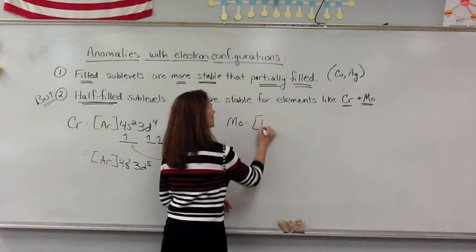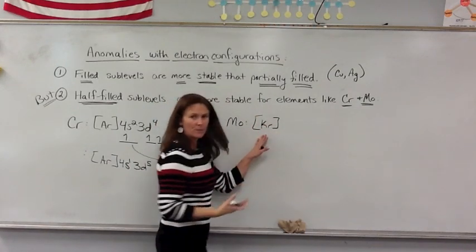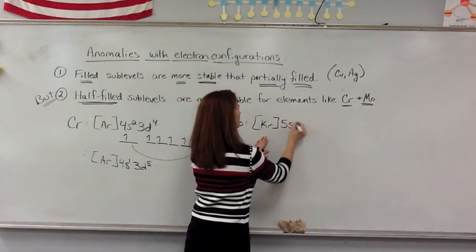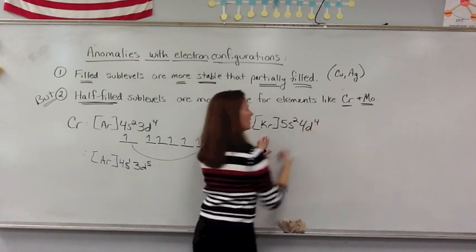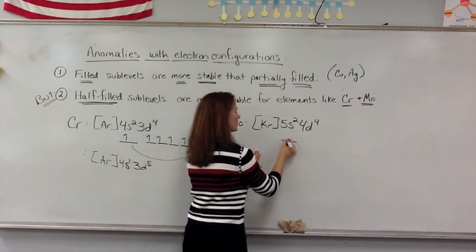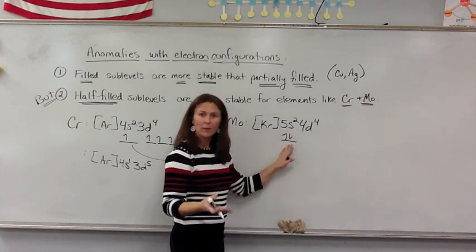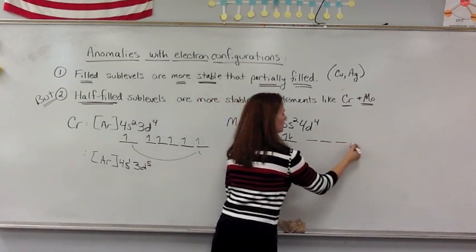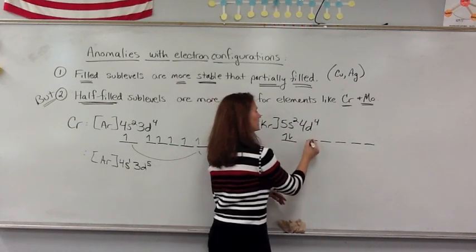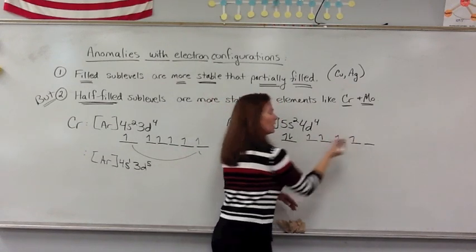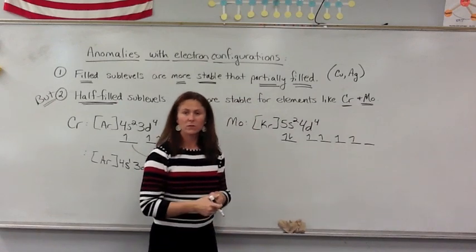MO has a configuration of, would be krypton in brackets, 5s2, and 4d with four. So, if you look at the electrons in the 5s, they are paired. And then, the five orbitals in the 4d sublevel, again, they only have four electrons total.